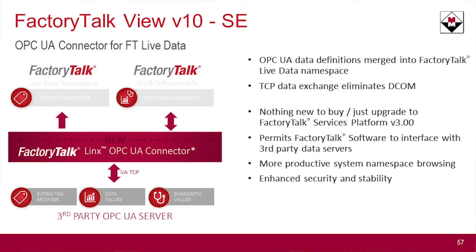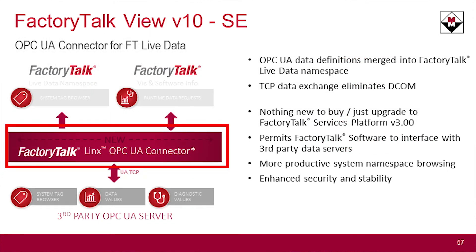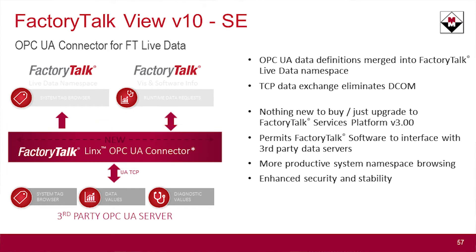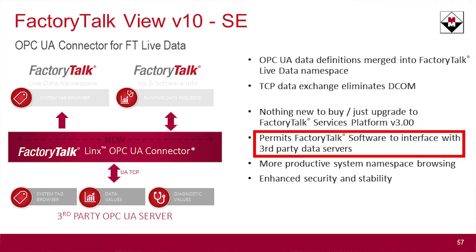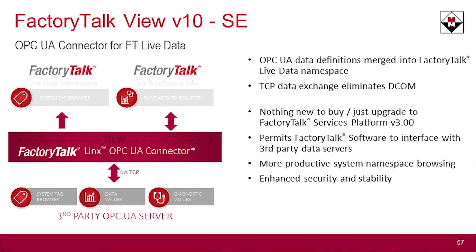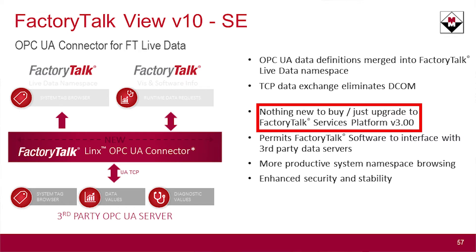The new Factory Talk Links also includes the OPC UA connector — the next generation of the OPC connector. Probably a lot of third-party software packages you may have encountered already use it. Rockwell has finally embraced it and included it here. There's nothing additional to buy; you get it when you upgrade to the latest service platform.